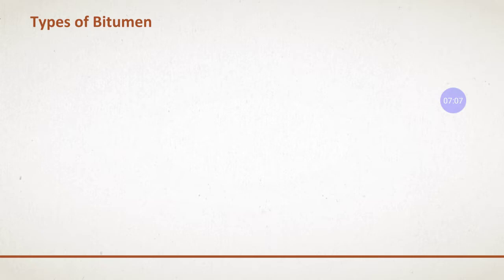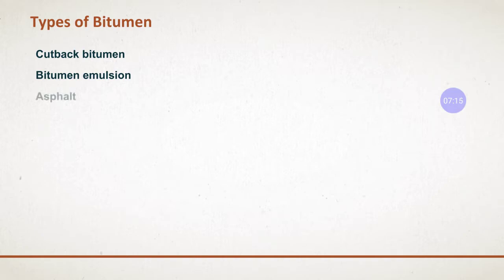There are three types of bitumen in your syllabus: cutback bitumen, bituminous emulsion, and asphalt. Two additional advanced types exist — plastic bituminous pavements (using plastic waste) and rubber cum bitumen (using waste rubber) — but these are not in your syllabus, so concentrate on the three main types.